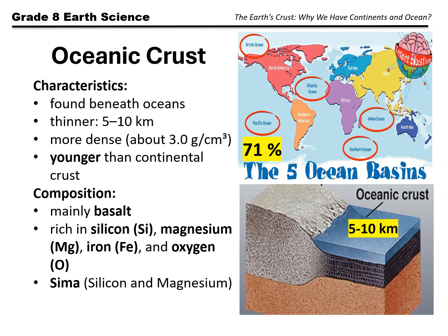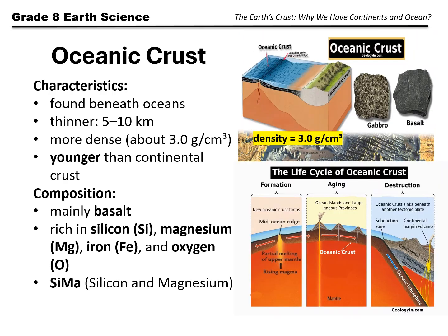Compared to the continental crust, which can reach 70 kilometers thick, the oceanic crust is very thin — only about 5 to 10 kilometers thick. The oceanic crust is denser than the continental crust. Its higher density comes from the heavy elements it contains, particularly iron and magnesium. Because it is denser, the oceanic crust sinks lower into the mantle compared to the lighter continental crust. This explains why oceans occupy lower regions of the Earth's surface, while continents are higher.